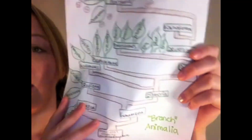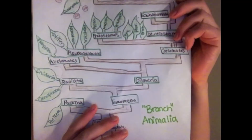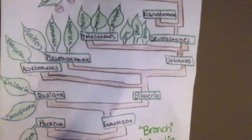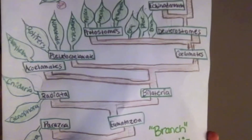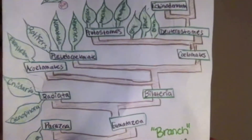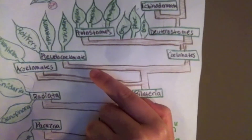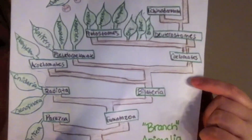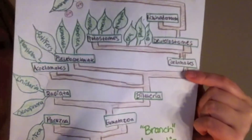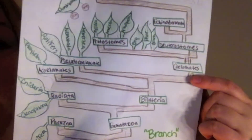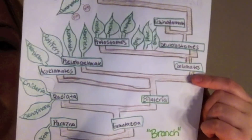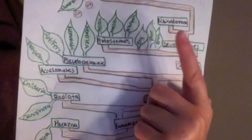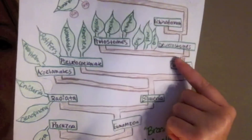The bilateria group is then divided by the type of body cavity that the organism possesses. Acoelomates don't have a body cavity. Pseudocoelomates have a body cavity, but it's not considered the true body cavity of coelomates. From coelomates, the organisms are divided into which opening in the body develops first — the mouth in the protostomes, and the anus develops first in the deuterostomes.